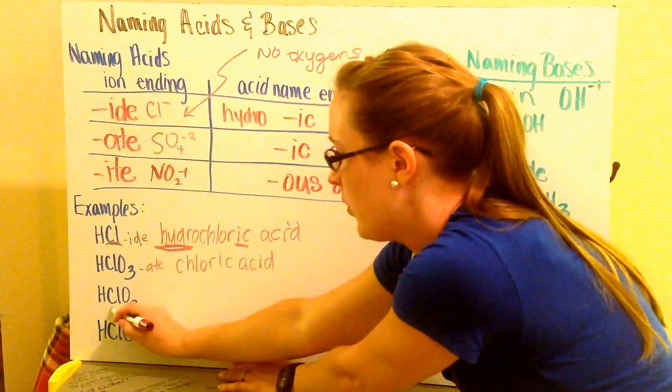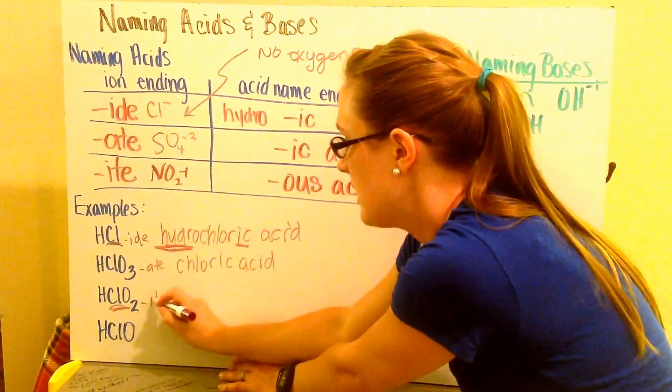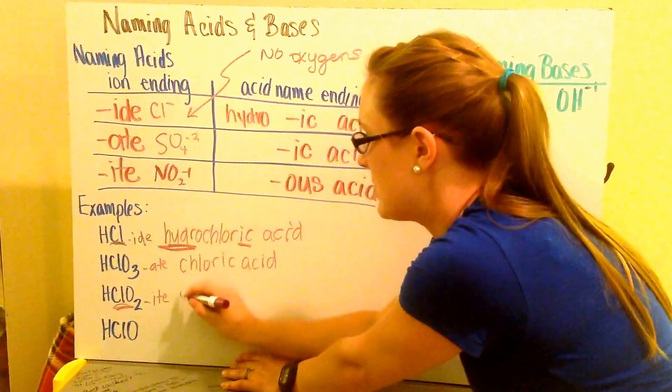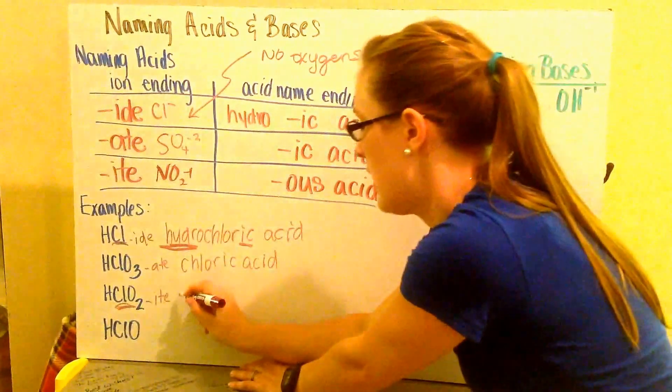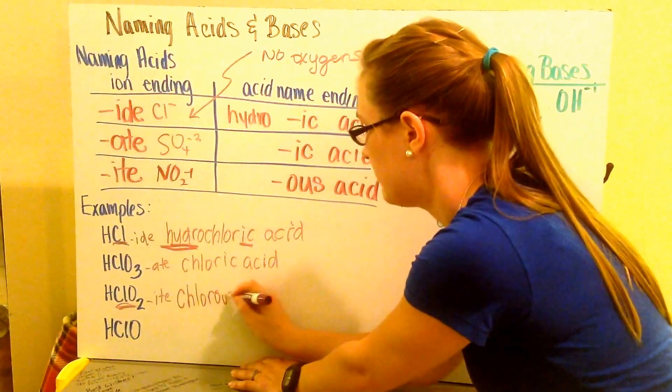My next one, I have chlorite, ClO2. That has my ITE ending. That means my ITE ending is going to go to OUS. So I have chlorous acid.